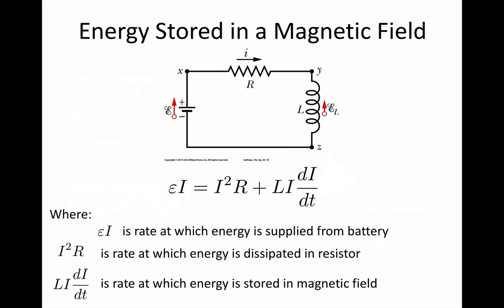So if we have a circuit with an inductor, the battery needs to supply more energy than in the circuit if it just had the resistor and no inductor. Part of the energy delivered by the battery is used as the internal energy in the resistor. So if it was a globe, it'd light up. The remaining energy is stored in the magnetic field of the inductor. So if we look at the power in the circuit,